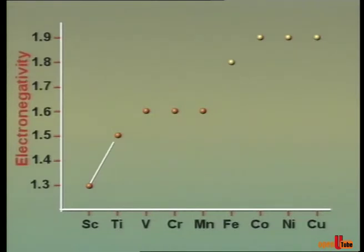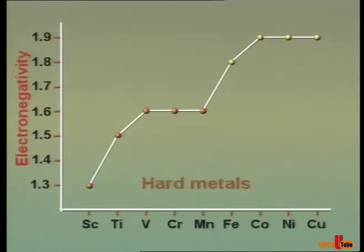Electronegativity of transition metals increases from left to right. Early transition metals in higher oxidation states are electropositive and called hard metals.